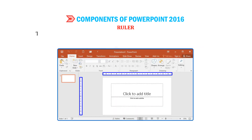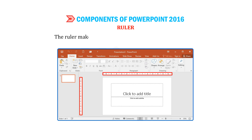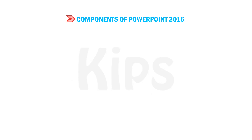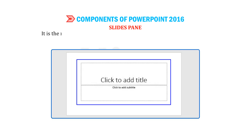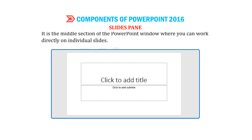Ruler: The two rulers, vertical and horizontal, are located at the top and to the left of the current slide, respectively. The ruler makes it easy to align text and objects on the slide. Slide Pane: It is the middle section of the PowerPoint window where you can work directly on individual slides.